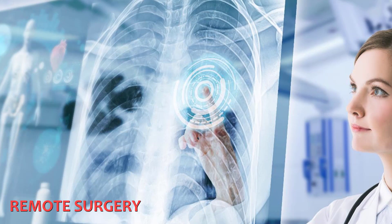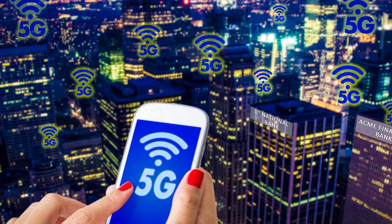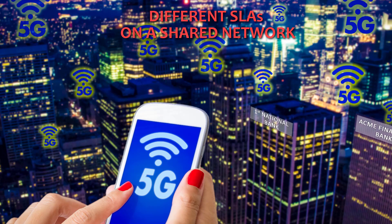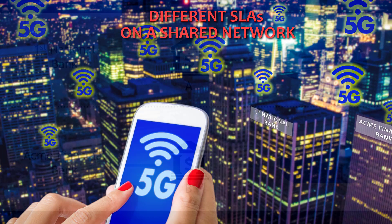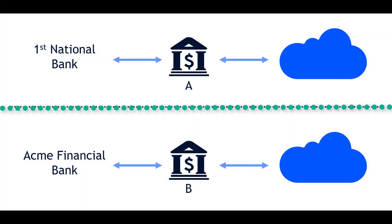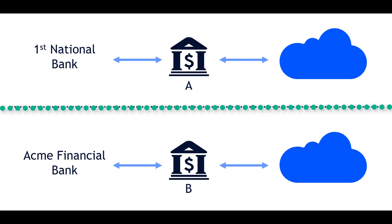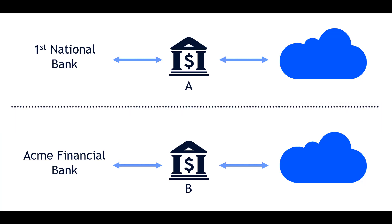Another example is where slices are created to serve customer needs with specific SLA requirements — for example, two banks, each receiving its own slice, with the defined quality of experience identifiers that are required by each bank's particular needs.